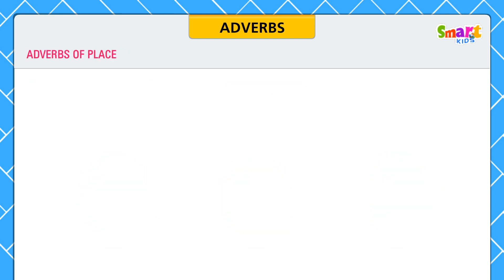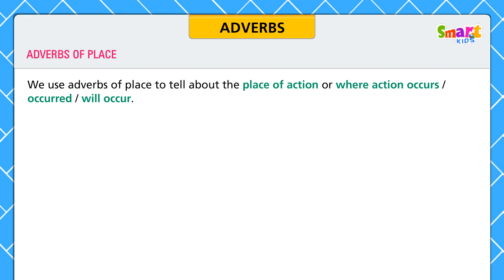Adverbs of place. We use adverbs of place to tell about the place of action — where an action occurs, occurred, or will occur. Let us look at the examples.